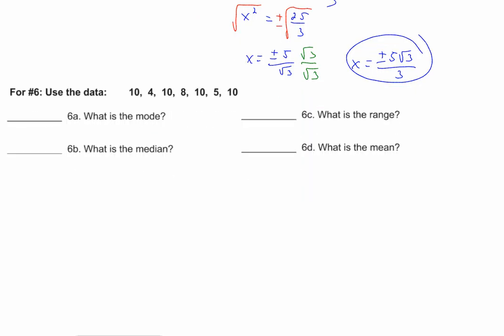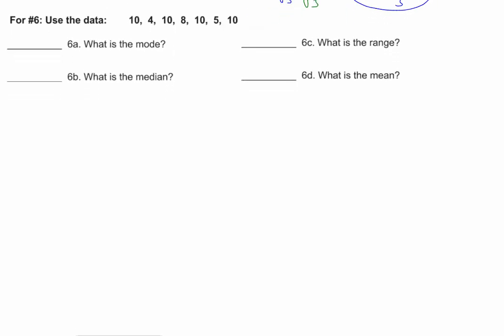Go ahead and do number six. Find the mode, find the median, find the range, and find the mean. Hopefully you got 10 for the mode, 10 for the median, 6 for the range, and 8.1 for the mean. Be careful with the median — the values were not in order. The 8 is the middle only when they're out of order; they have to be in order to read the median. Range is highest minus lowest, mode is the most often occurring, and the mean is the arithmetic average — sum them up and divide by the total number.